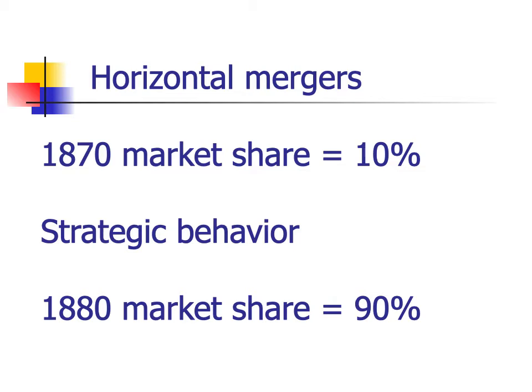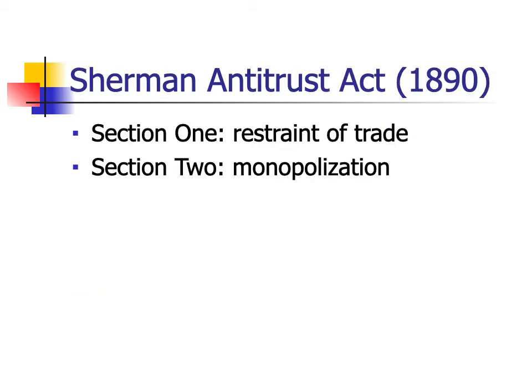By 1880 — a mere 10 years afterward — the Standard Oil Trust had accumulated about 90% of U.S. refining capacity in terms of market share. In response to the Standard Oil Trust and other large trusts in other industries, the Sherman Antitrust Act was passed in 1890.